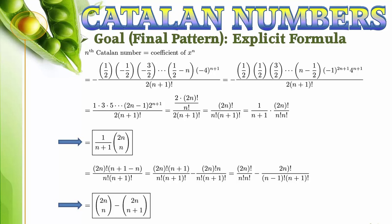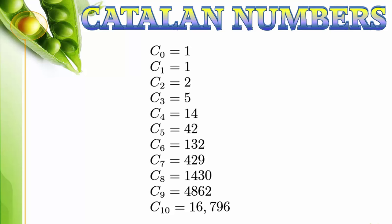Now it is much easier to calculate any Catalan number. As an example, the first 11 Catalan numbers from C sub 0 to C sub 10 can be easily calculated as 1, 1, 2, 5, 14, 42, 132, 429, 1430, 4862, and 16,796.